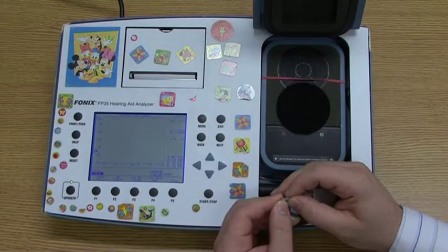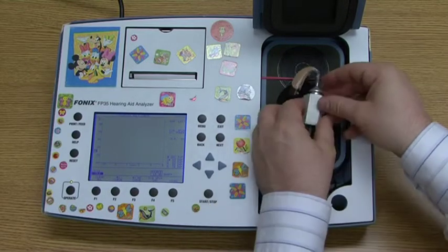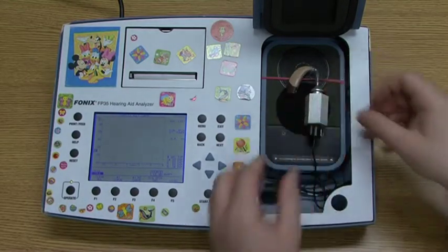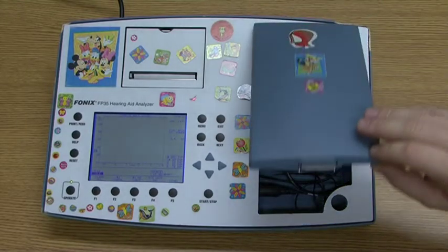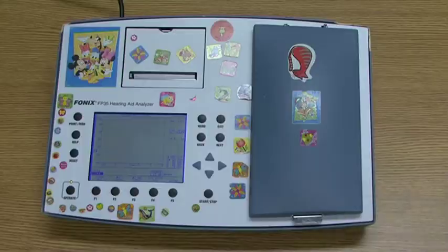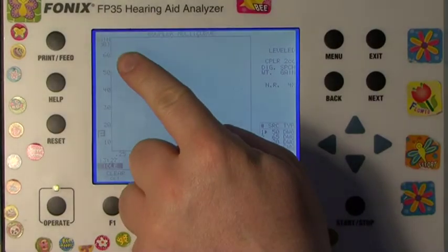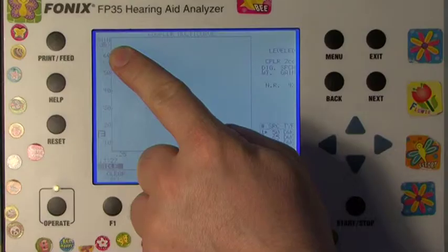Adjust as necessary so that the hearing aid microphone is placed into the center circle of the loudspeaker as shown. Turn on the hearing aid and close the lid.